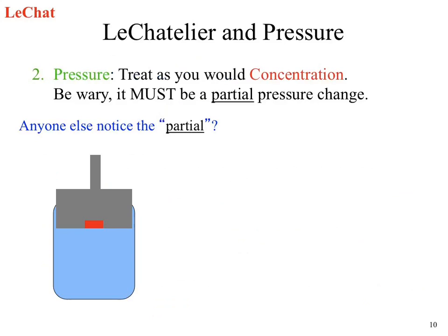Pressure can be a bit tricky. One of the things we need to note is that the partial pressure must change. Why do we have to look at the partial pressure? When we're looking at an individual reaction with reactants in equilibrium with our products, we have the potential for the pressures of these species to be detected and change. We don't want to look at the total pressure because we want the concentration of just this species. When we go back to the ideal gas law, it's just that species to get our concentration.